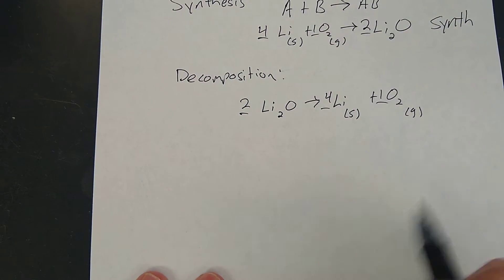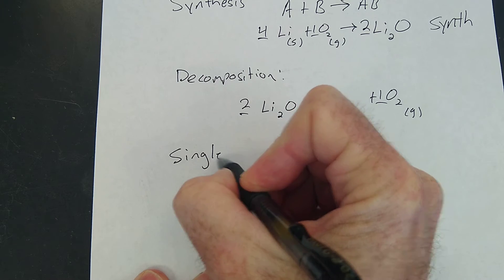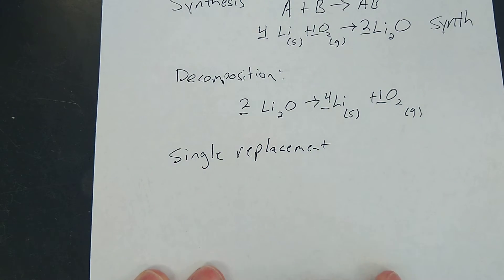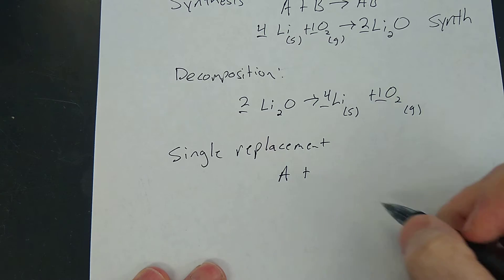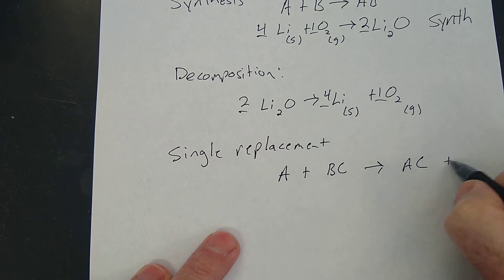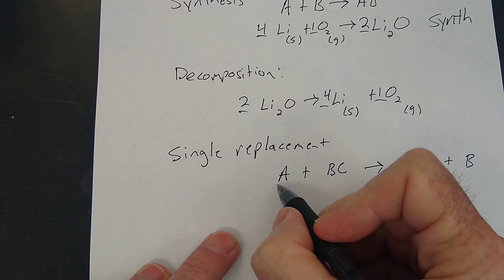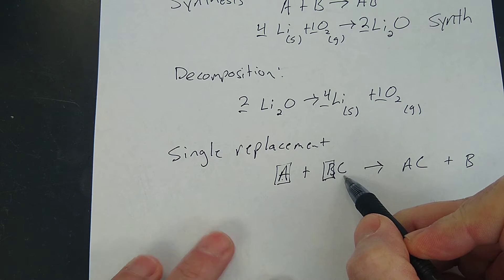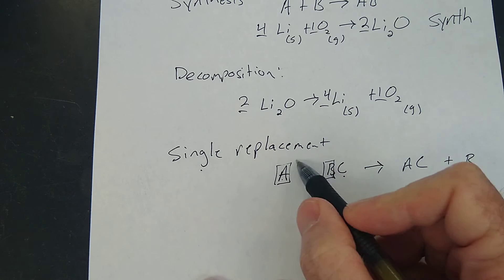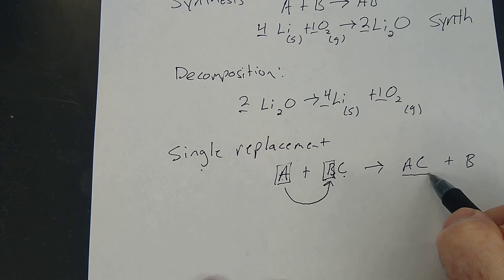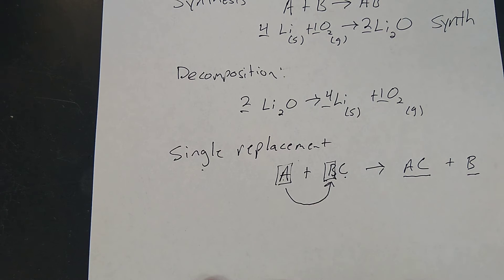Next type will be single replacement. A single replacement reaction is like you've got A and then you have another compound BC and you combine them. Then you end up with A being with C and then B is by himself. So the first letter in the compound, that will be like the metal, and the second letter will be the non-metal. So in this single replacement, the A replaces the B in this relationship and now A is with C and B is by itself. That's a single replacement reaction.